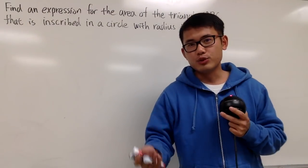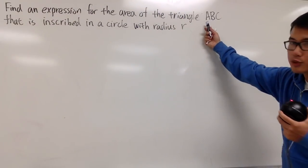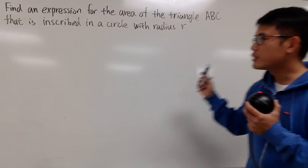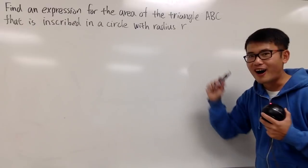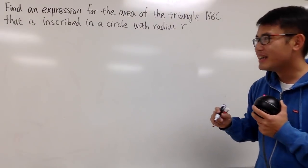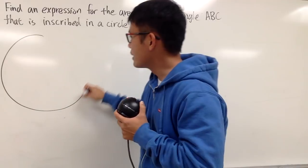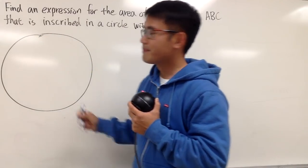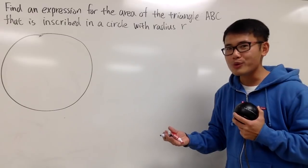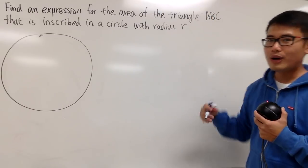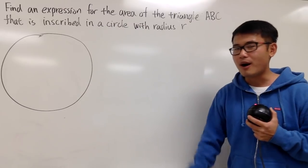In this video, I'm going to show you how to write an expression for the area of a triangle ABC, and that triangle is inscribed in a circle with radius R. The main goal is to show that this triangle, if you want to have the biggest area, it has to be equilateral — but I'll do that in the next part.